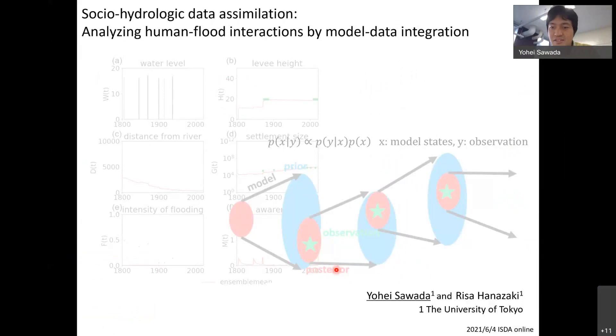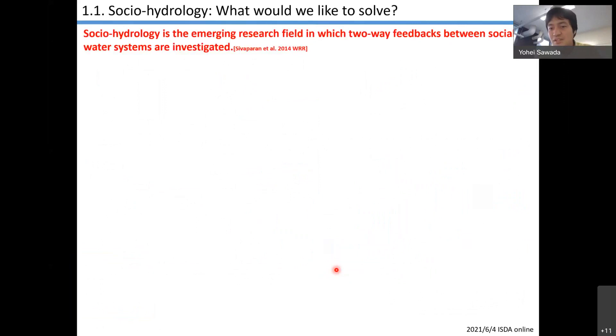I would like to discuss the potential of data assimilation to the social system dynamics. So, socio-hydrology - what is it? Socio-hydrology is the emerging research field in which two-way feedbacks between social and water systems are investigated.